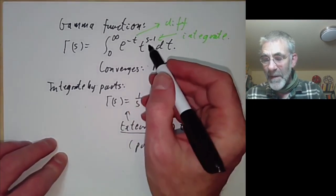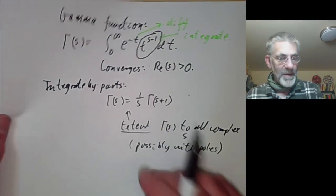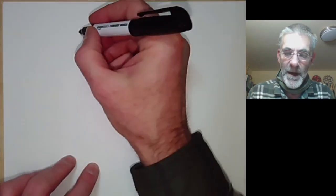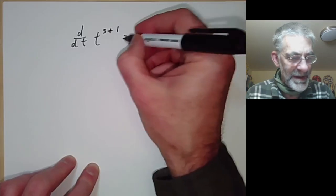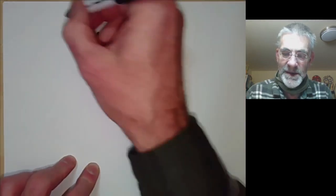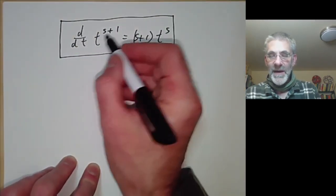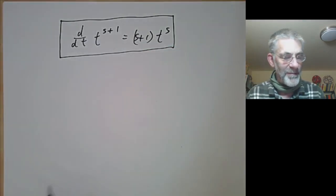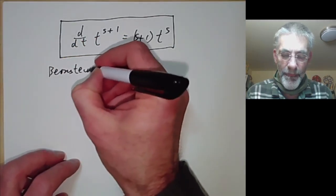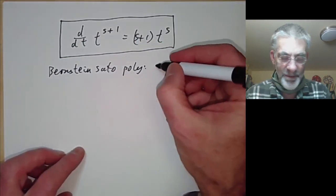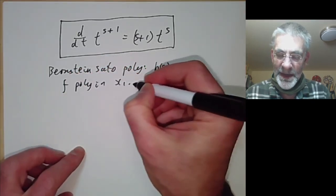The key point why you can extend it is the following: d/dt of t^{s+1} equals (s+1)·t^s, which means you can integrate t^s and convert it into t^{s+1} when integrating by parts. This brings us to the Bernstein-Sato polynomial b(s), where f is a polynomial in several variables x_1 up to x_n.